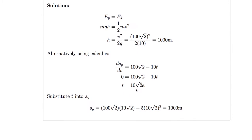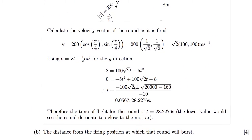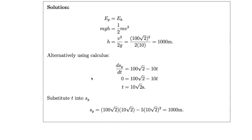Alternatively, you could use calculus. Taking the y-displacement expression and differentiating with respect to t gives 100√2 minus 10t. Rearranging gives the time at which the trajectory is at its highest point. Substituting that time back into the initial equation gives the same answer of 1,000 metres.